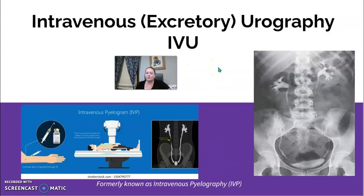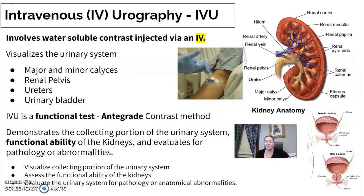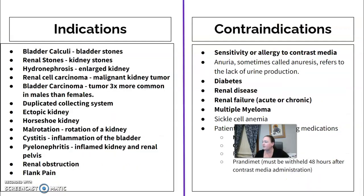The IVU is where we'll start. It was previously called an IVP, so older protocol books or texts may still use that term; the current textbook term is IVU. As the name indicates, it involves an IV — we place an IV and inject contrast, which highlights the kidneys, drains through the ureters, and into the bladder. It is a functional test using the antegrade contrast method and demonstrates the functional ability of the kidneys, evaluating for pathologies or abnormalities within the urinary collecting system.